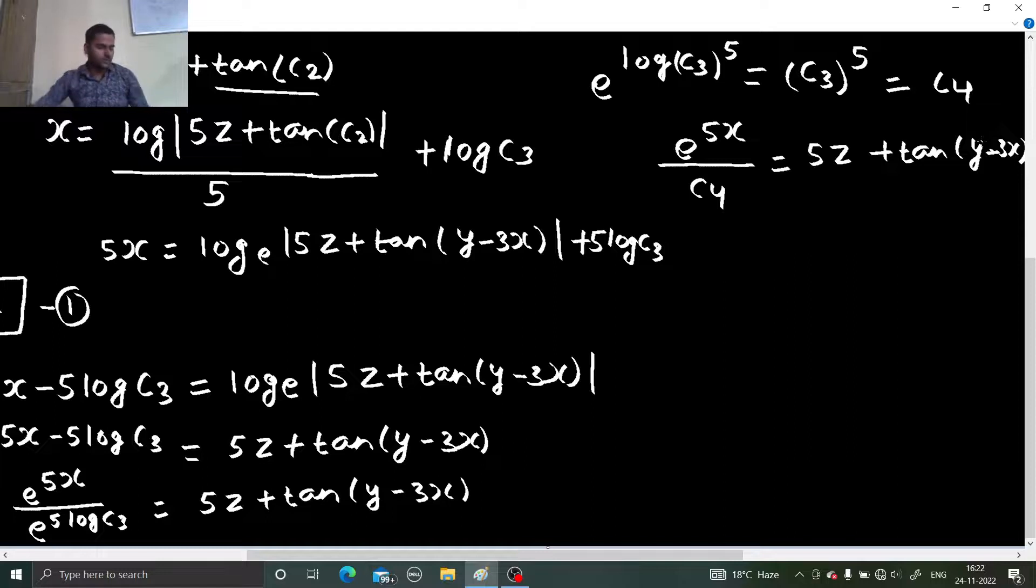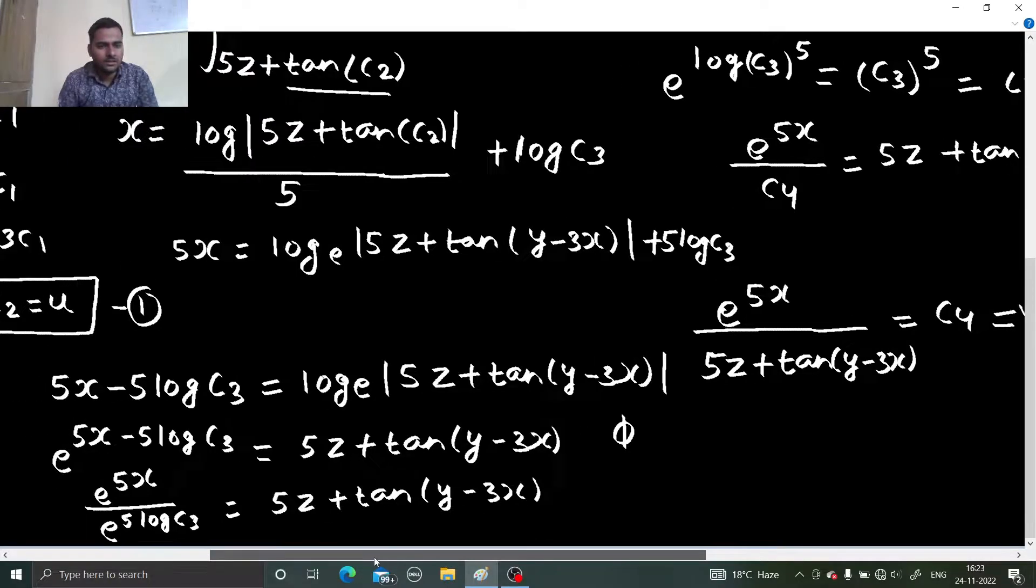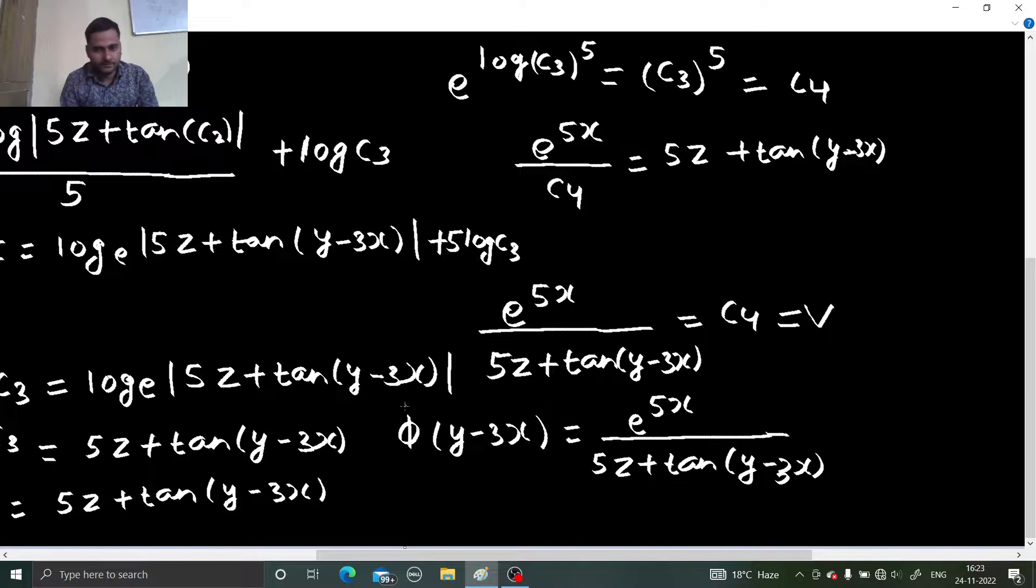Look where I have reached. And I think I am near to that solution which they are giving. Because e power 5x divided by something and then I can simply send this c4 to the other side. So e power 5x divided by 5z plus tan y minus 3x times c4. There you go. Final solution as they keep on telling. Phi of first function equals second function. So phi of simpler function was y minus 3x equals to the other one.